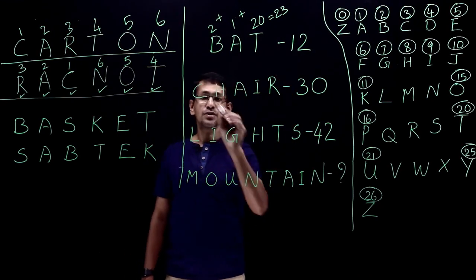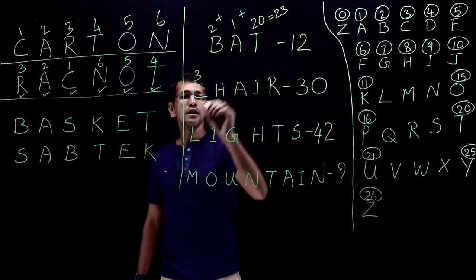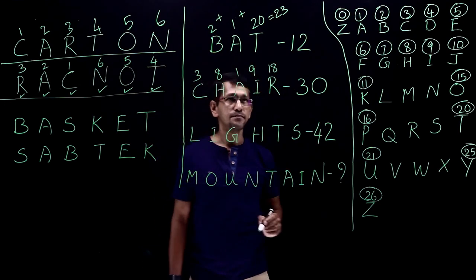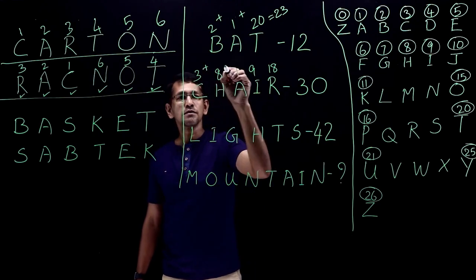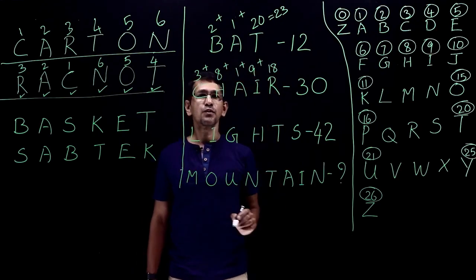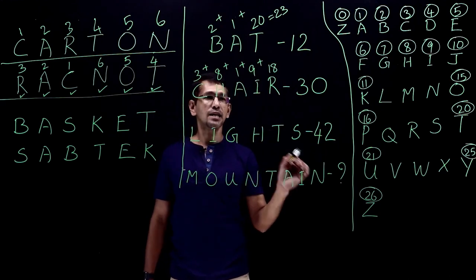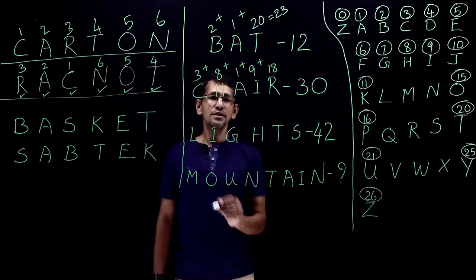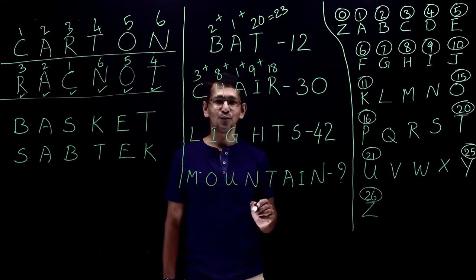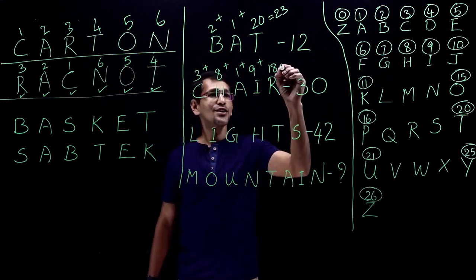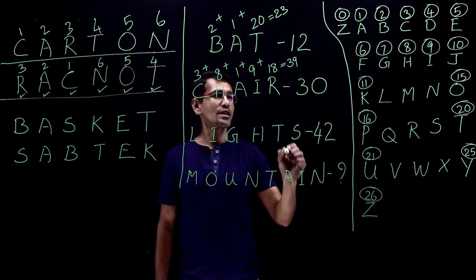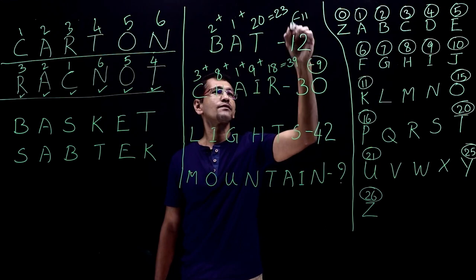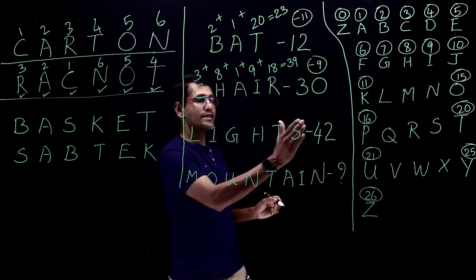So next one. Chair: 3, 1, 8, 1, 9, 18. Add it up. What do you get? 1 plus 9, 10. 8 plus 3, 11. So 10 and 11, 21. 21 plus 18. What is it? 39. So the sum is 39. And the code is 30. So the difference is what? Minus 9. In this case, what is it? Minus 11.